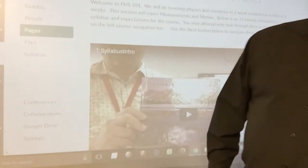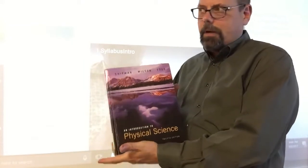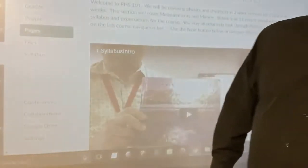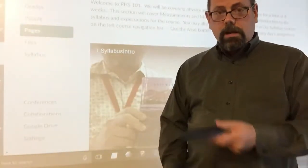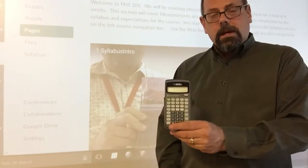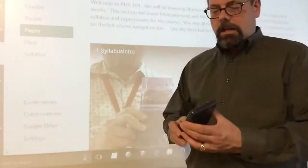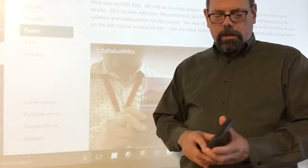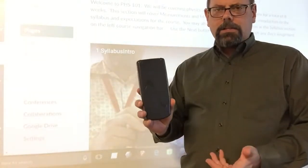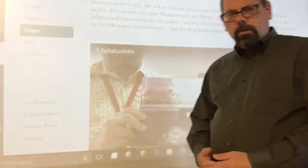The book we're using is Shipman, Wilson, and Todd. I got it at Half Price Books for $10, but new online it's probably $150 to $160 — that's the market. The calculator I'd recommend, because you will need one for a lot of the work, can be as inexpensive as the TI-30, which is about $15 to $17 at Walmart. I love the TI-83, which I bought 25 years ago and still use every day. The TI-83 runs $70 to $90 and the TI-84 runs about $110 to $130, depending on where you buy.